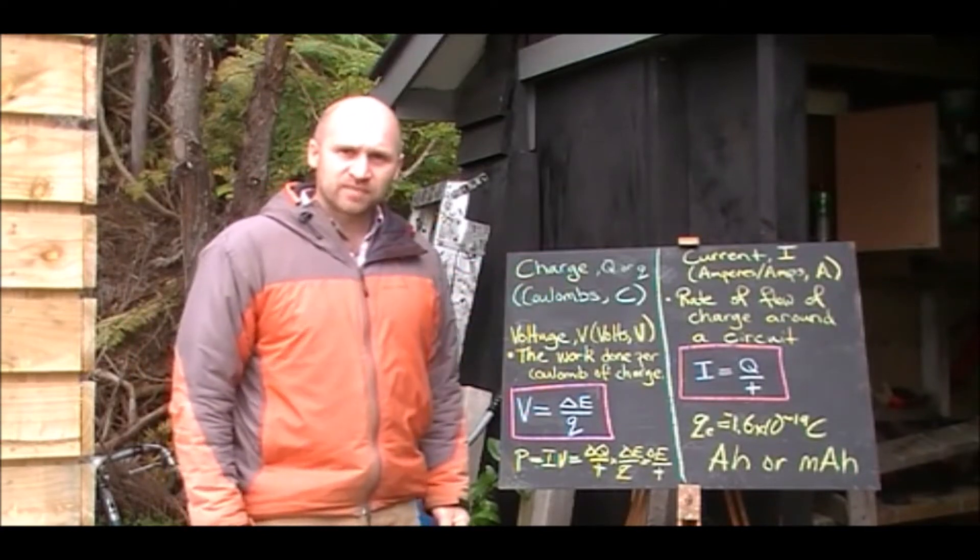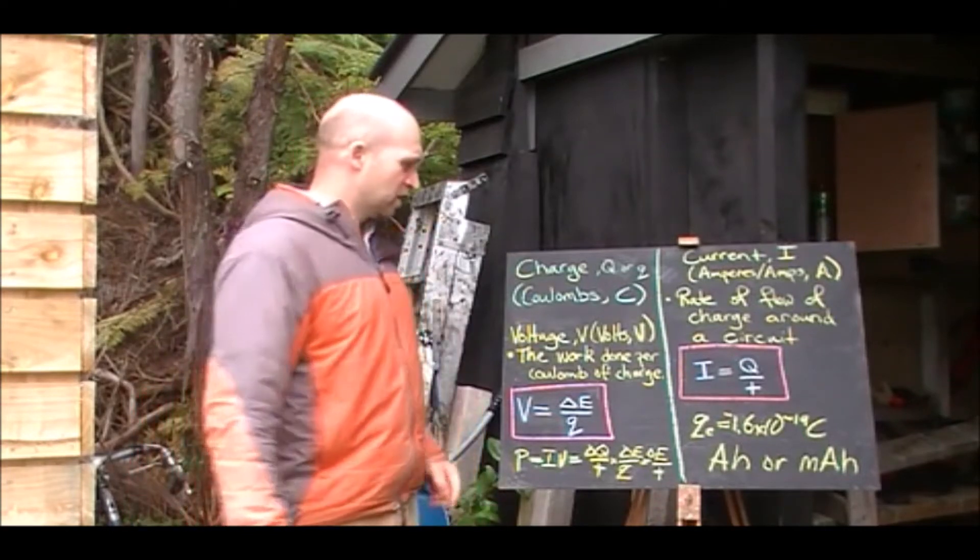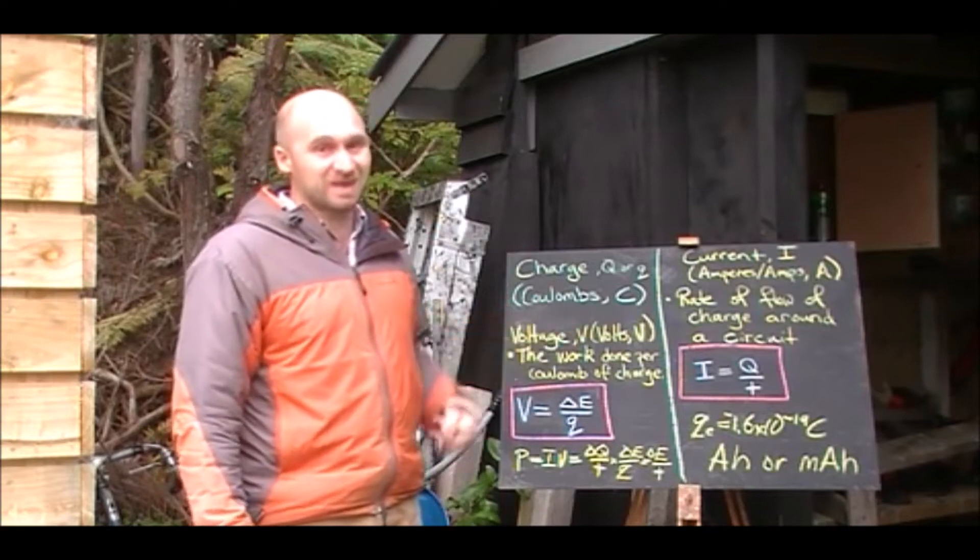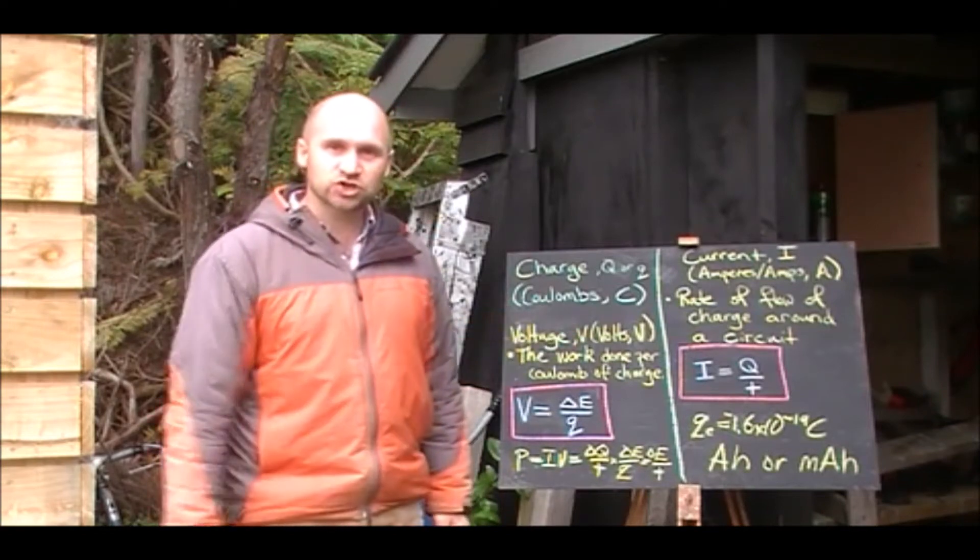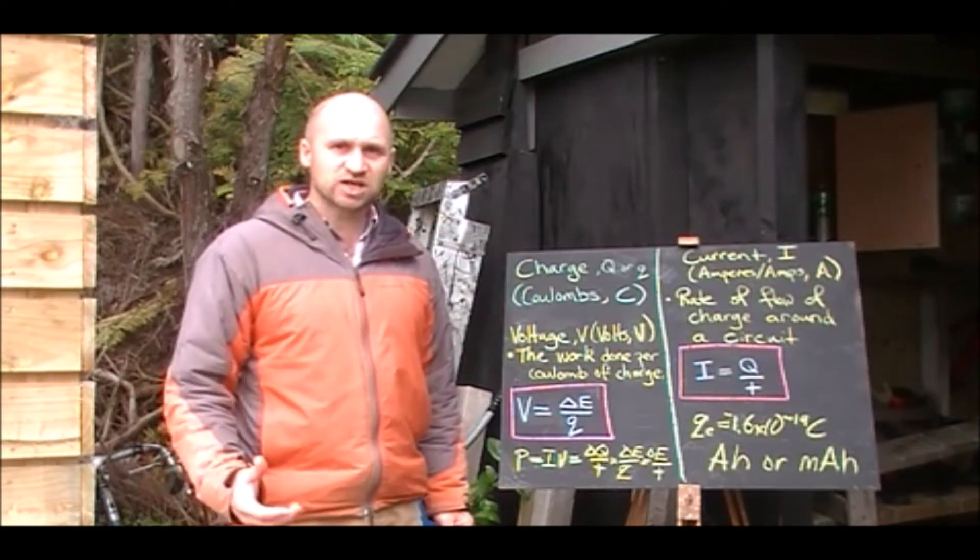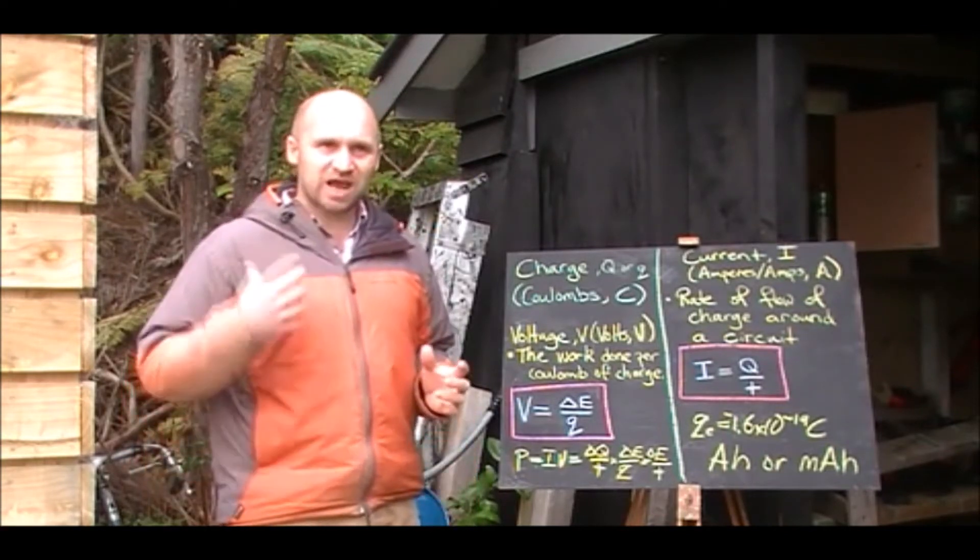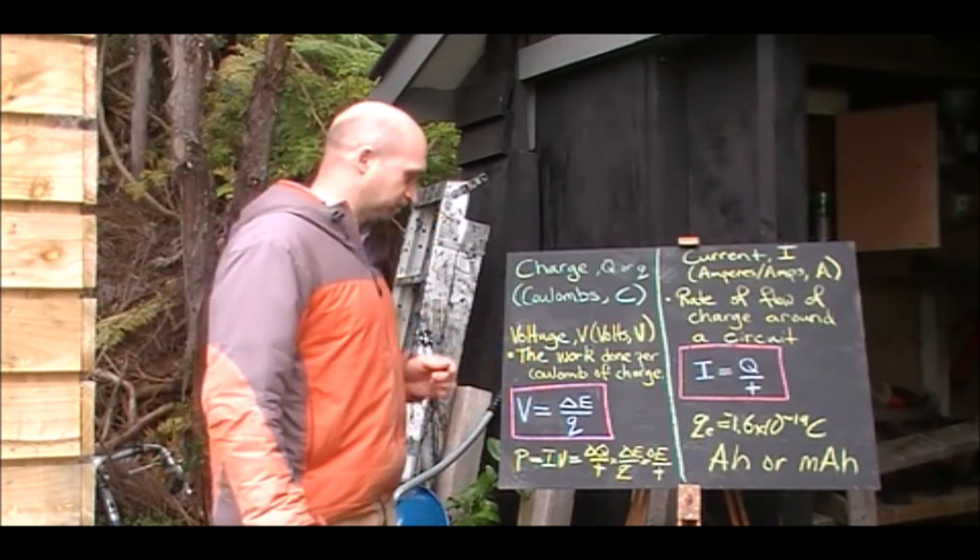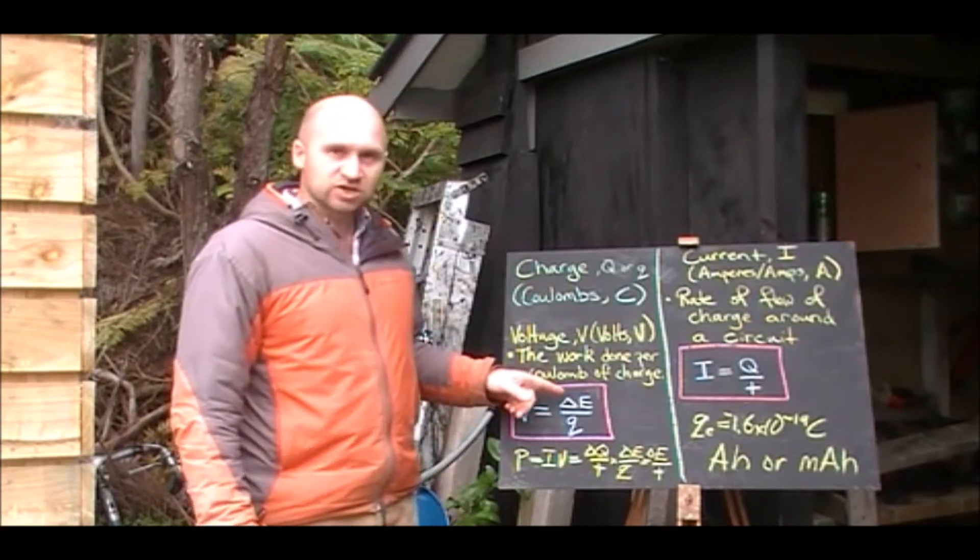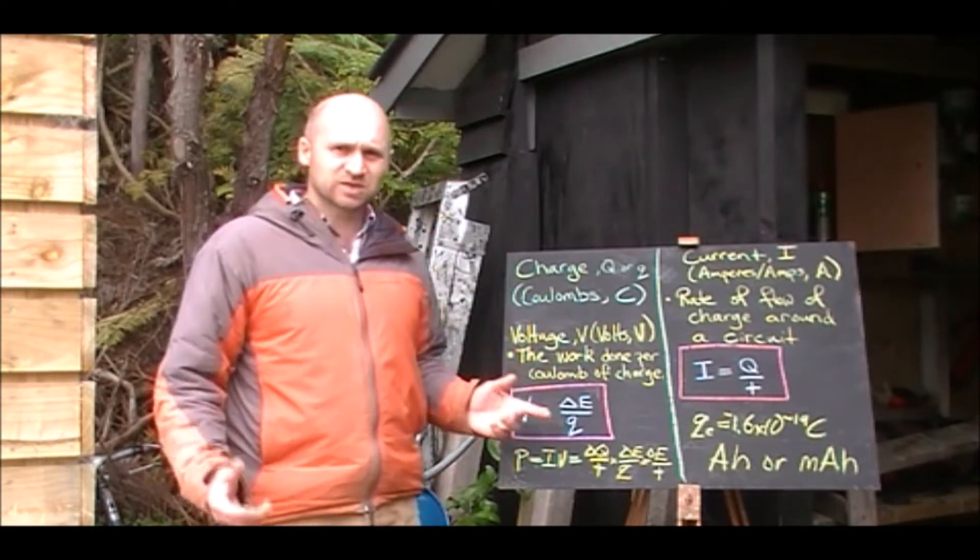Now when we looked at that battery in the car there, it claimed to be a 12 volt battery. What's voltage? Voltage, symbol V, is measured in volts. The symbol for volts is also V. That makes it really easy. The definition of voltage is the amount of work done per unit charge. How much energy is carried by each coulomb of charge and that energy isn't just carried but it's used to do work somewhere in our circuit. We can write that down mathematically. V is change in energy delta E over Q, charge. So that's what voltage is.